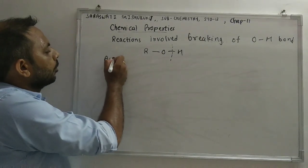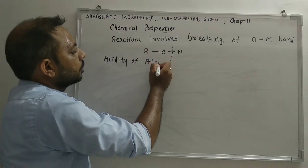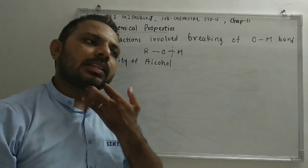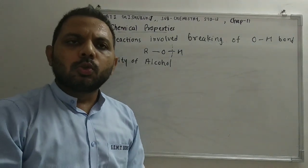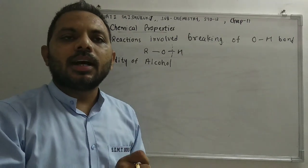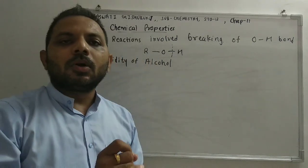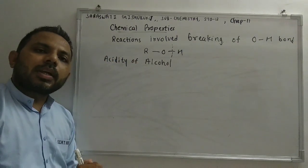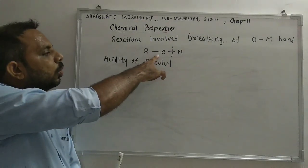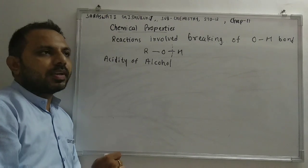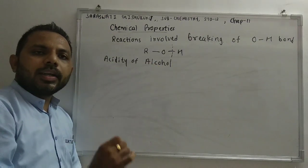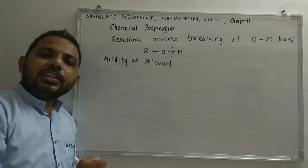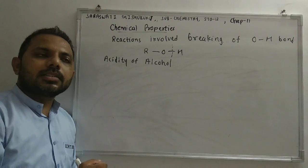The first chemical reaction based on breaking of the O–H bond is acidity of alcohol. Now, why is alcohol acidic in nature? Those compounds which can donate protons easily are acidic. So here we are talking about the acidity of alcohol, meaning alcohol has the property to donate a proton. The chemical reaction in which alcohol donates protons is the reaction with metals.